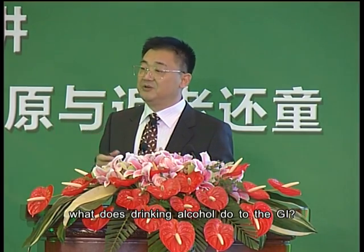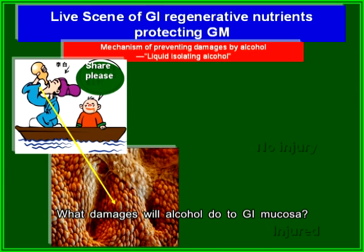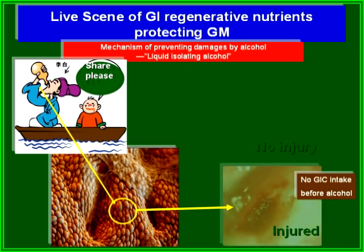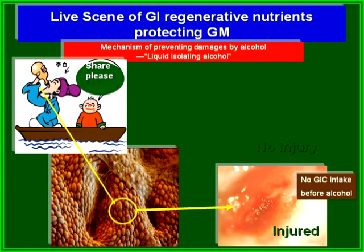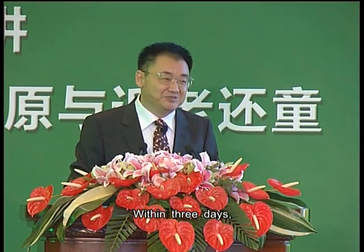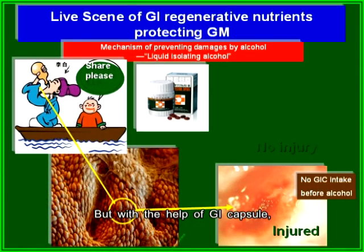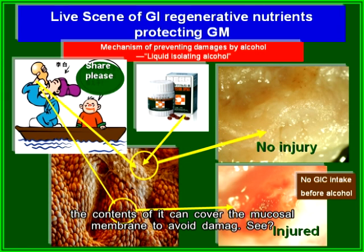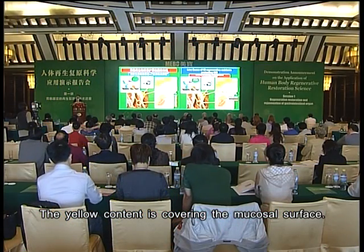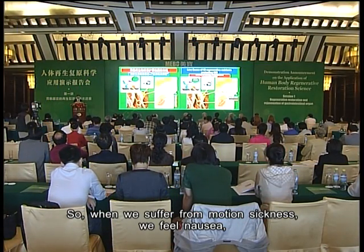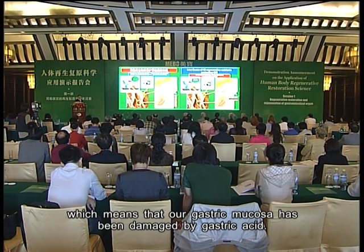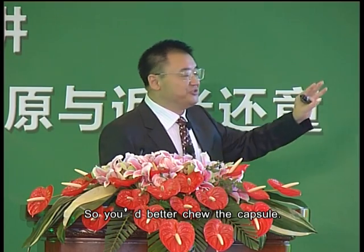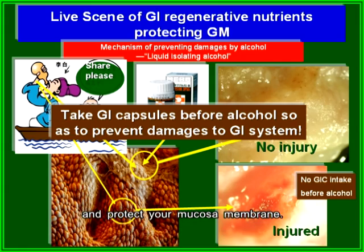Drinking 125 grams of white spirit damages GI mucosa significantly, as seen in pictures after drinking. Usually the gastric mucosa membrane can self-repair within three days, but with the GI capsule, you don't have to suffer from this discomfort. The capsule content covers the mucosal membrane to avoid damage. When suffering from motion sickness and nausea, which means gastric mucosa has been damaged by gastric acid, it may be too late to swallow the capsule — so you should chew it instead. This can immediately relieve symptoms and protect your mucosal membrane. Remember to take capsules before drinking alcohol.